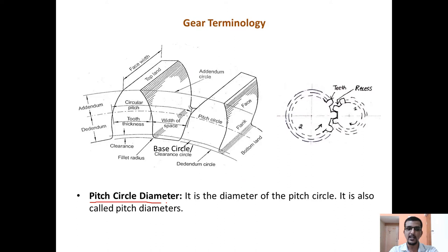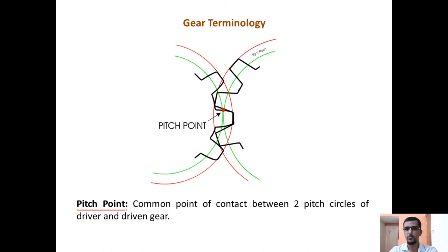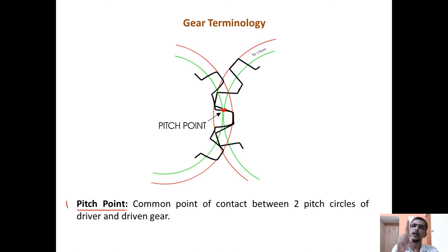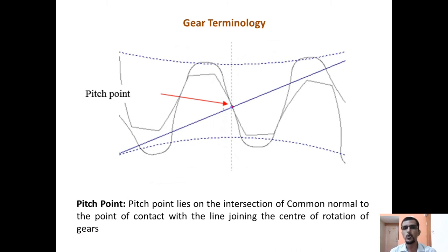The next terminology is pitch circle diameter — the diameter of the pitch circle, also called PCD. The next terminology is the pitch point, which has two alternative definitions. The first definition: wherever the two pitch circles of the driver gear and driven gear meet, the point of contact of the two pitch circles is called the pitch point. Both pitch circles meet at only one point, and that point always remains stationary — the pitch point does not move even though the two pitch circles are in rotation.